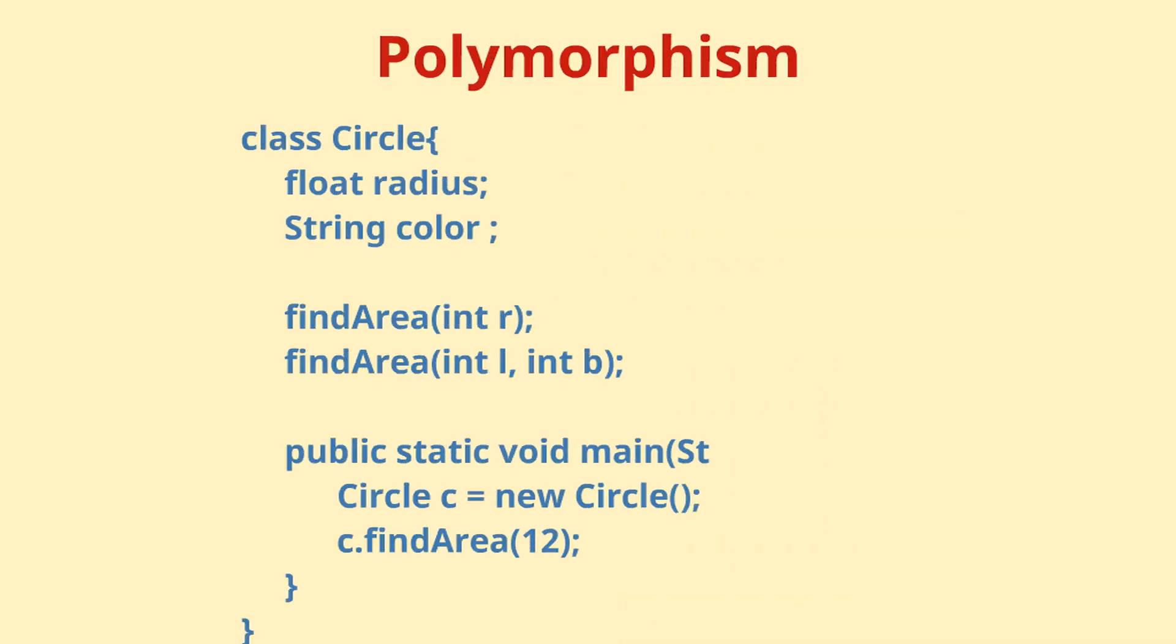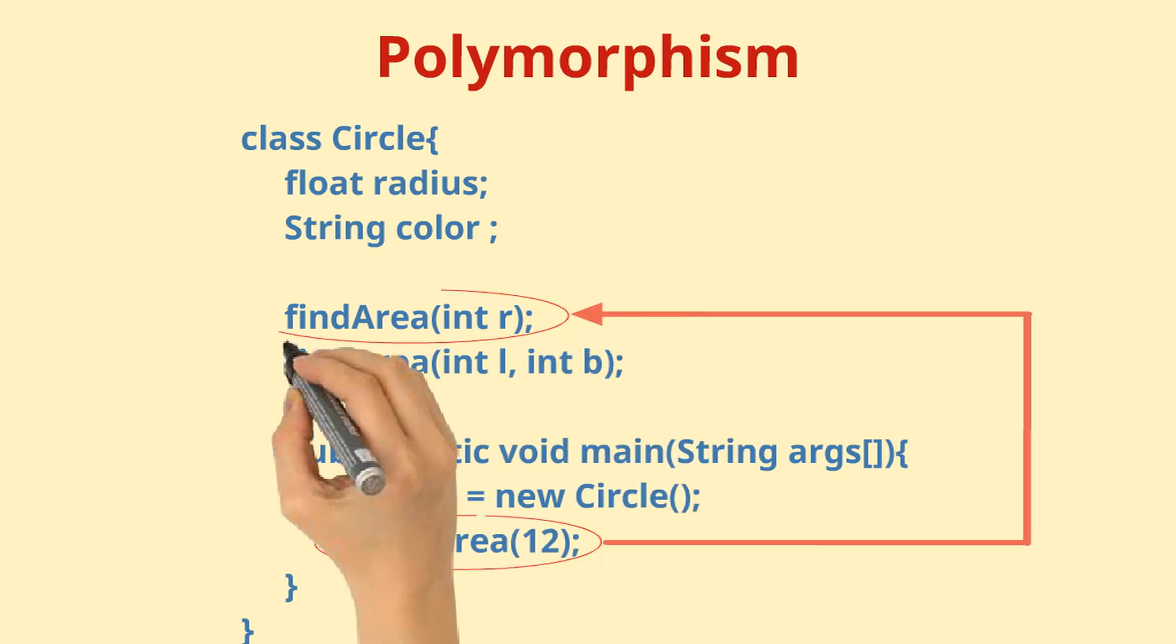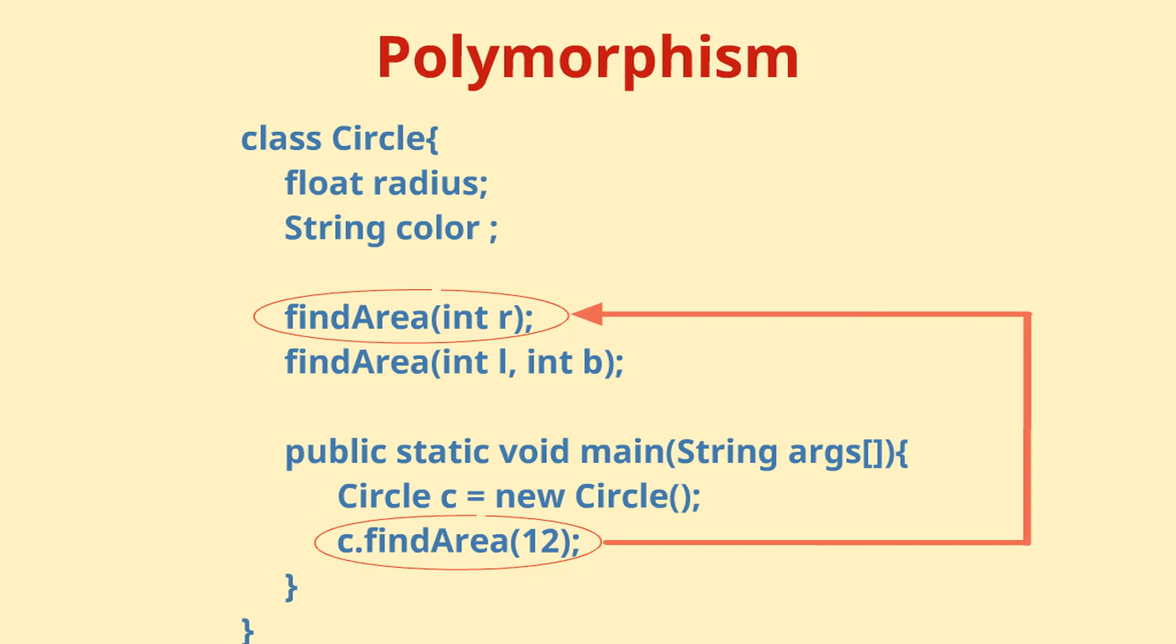Polymorphism simplifies the usage of object methods by external code and Java takes care of calling the right method with the help of the signature and the declaration of these entities. In our next video, we will learn more about creating new classes and objects.